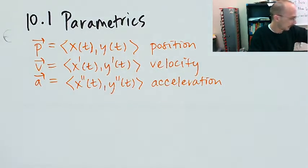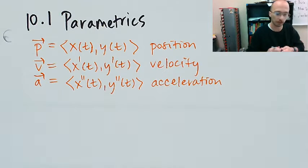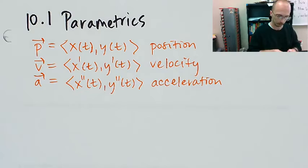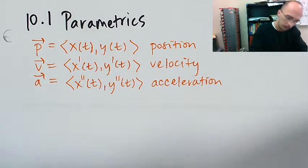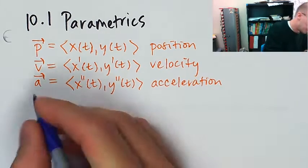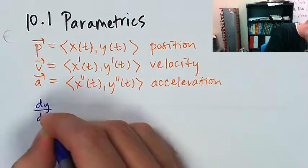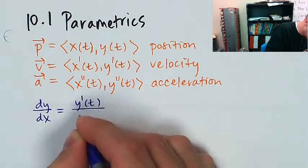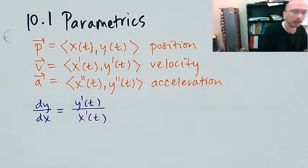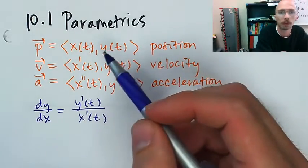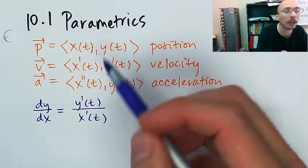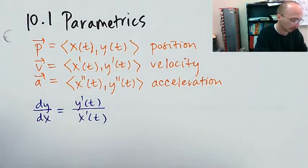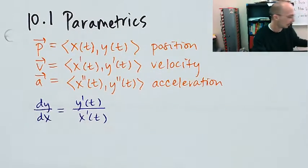We learned that to find the slope of the tangent line to one of these parametric equations, in order to find dy/dx, we took y'(t) and divided it by x'(t). Sometimes they're going to give you the position or the x and y as a vector. Sometimes they just give them as equations. We need to be able to deal with both of those scenarios. And this was easy enough. It pretty much worked like we expected.